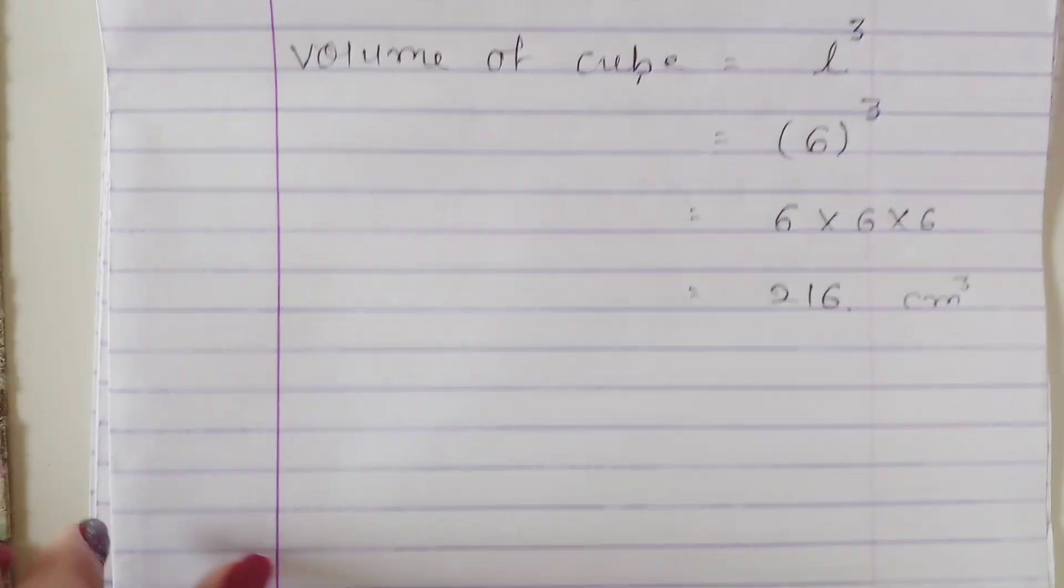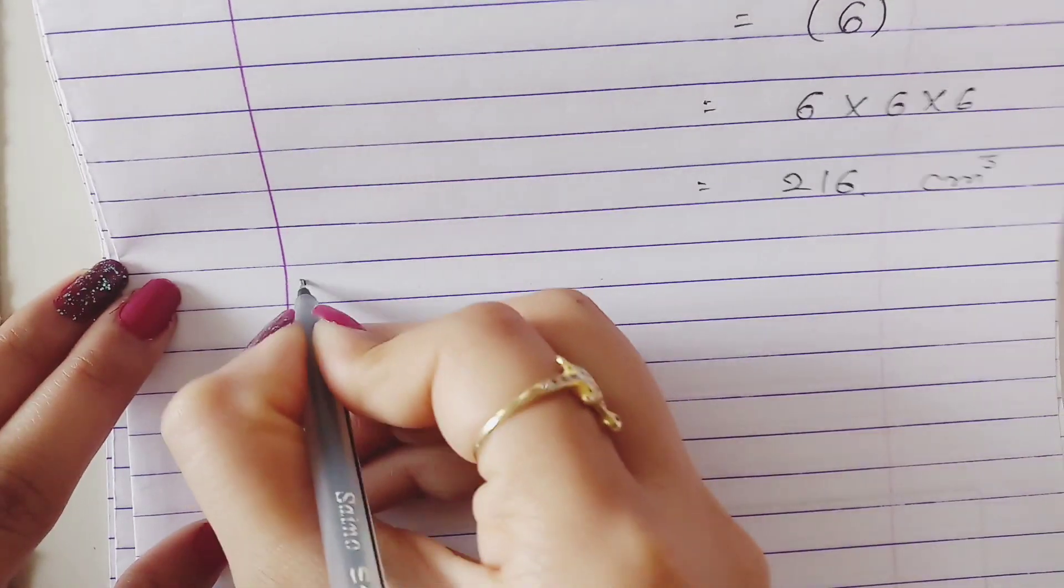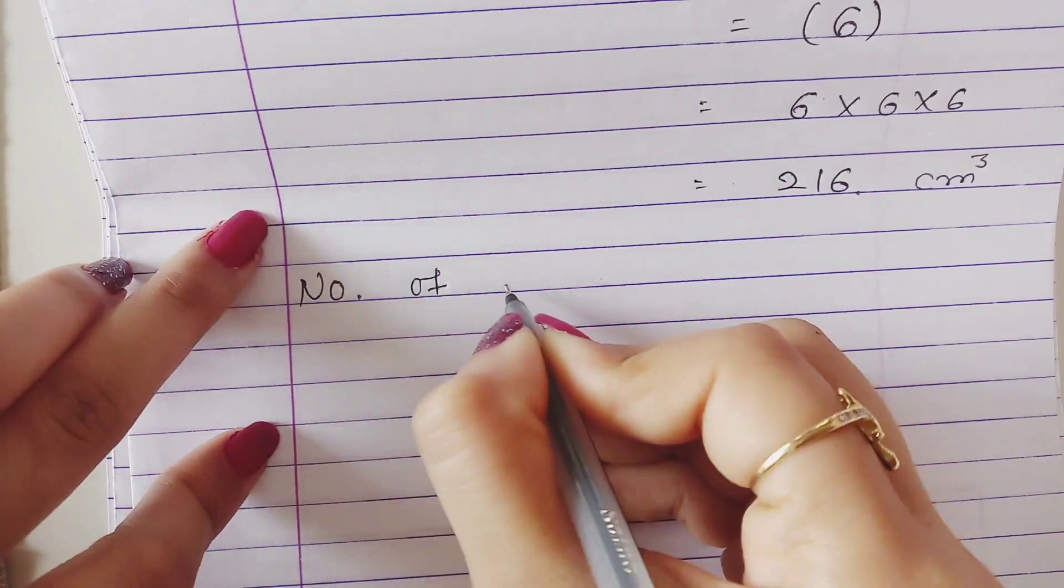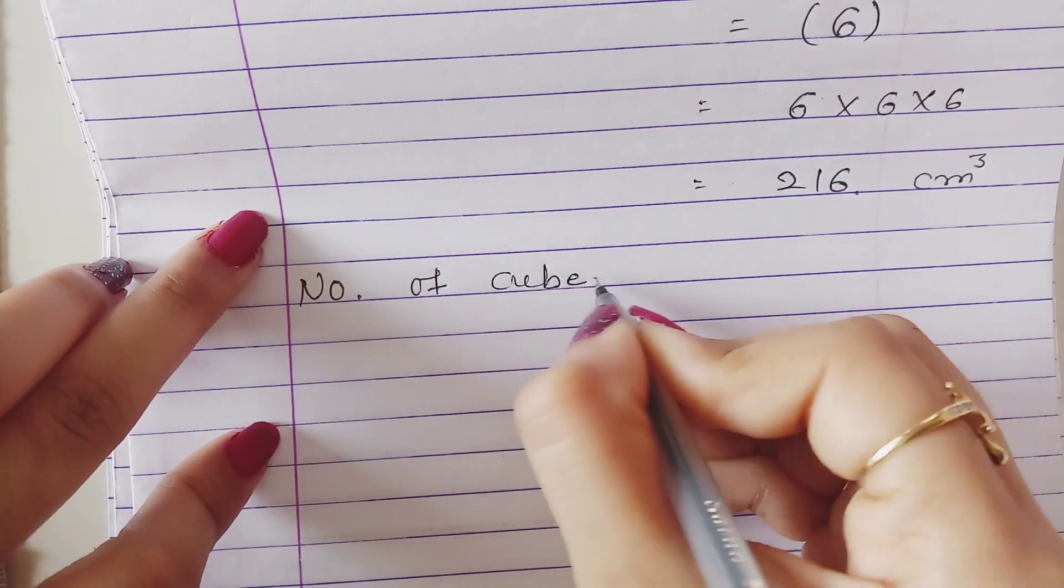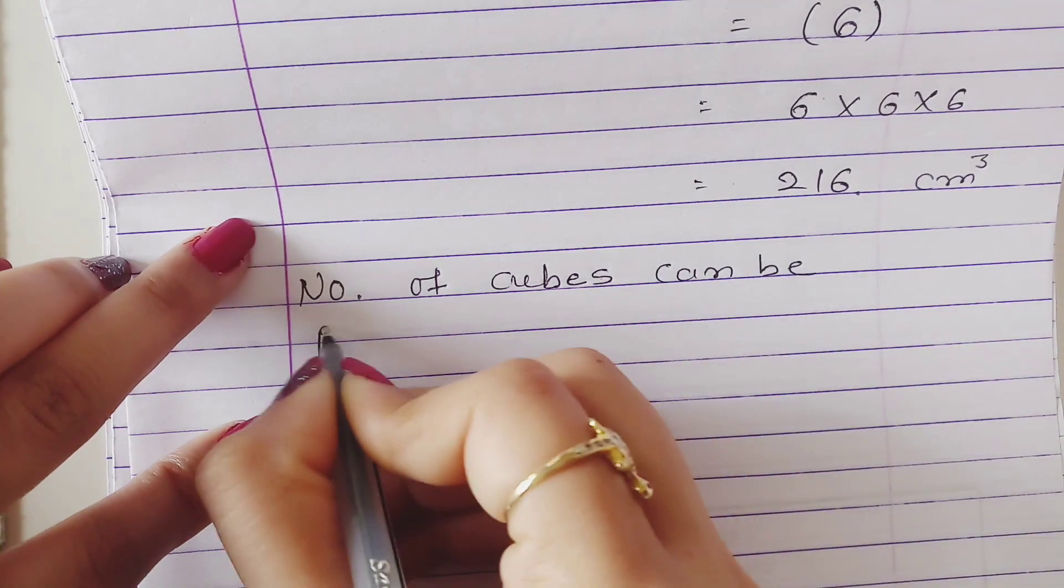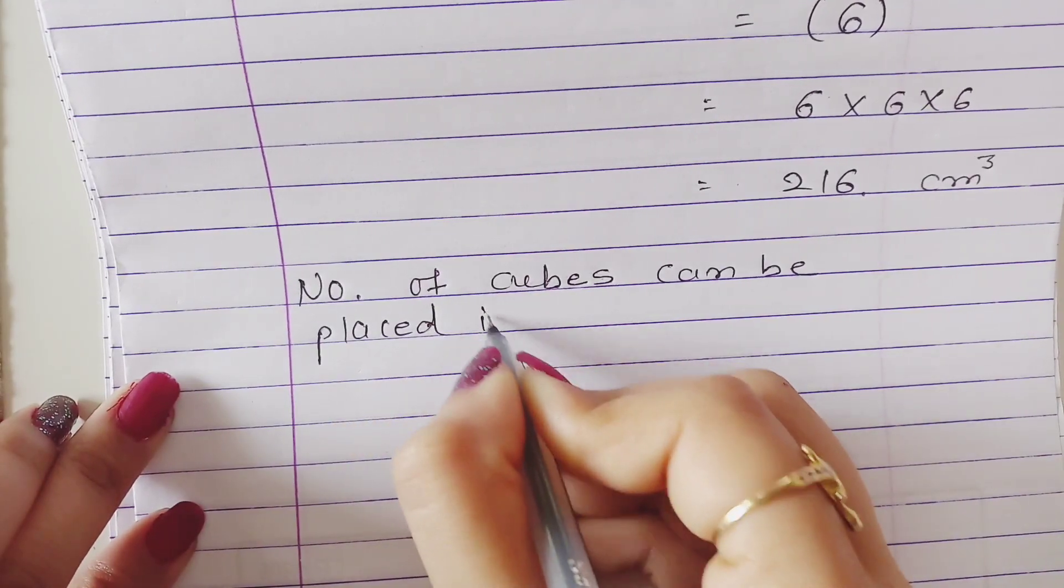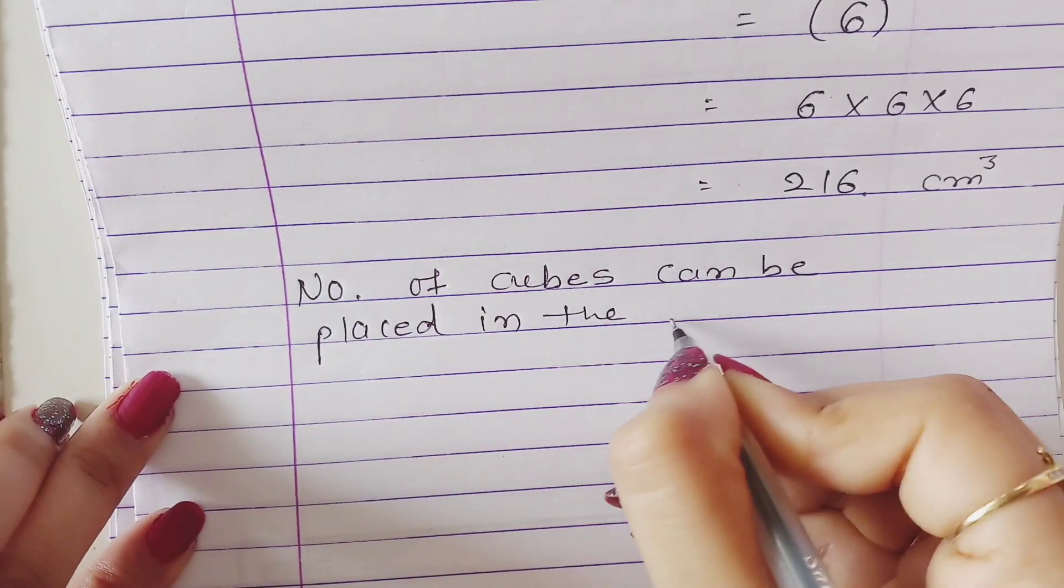Now we find the number of boxes. Number of cubes can be placed in the given cuboid equals 97200 divided by 216 equals 450.